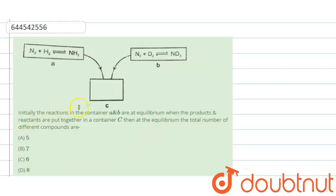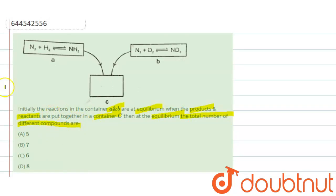The given question is: initially the reactions in containers A and B are at equilibrium. When the products and reactants are put together in container C, then at equilibrium the total number of different compounds are — this is what we have to find.